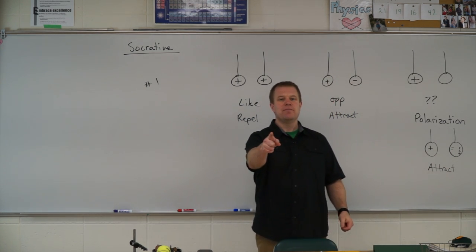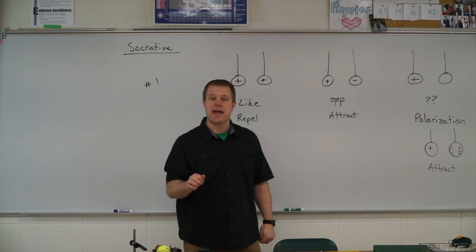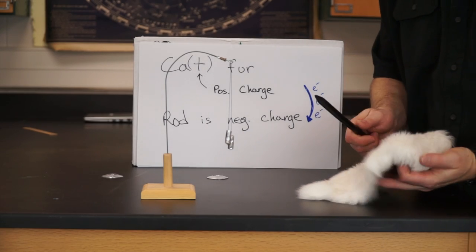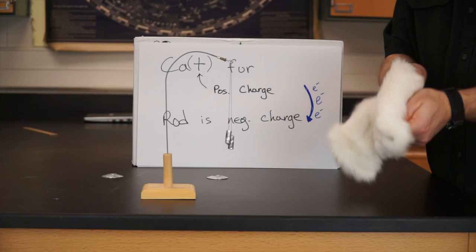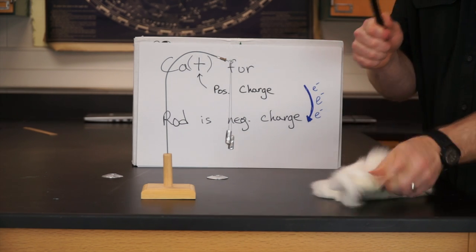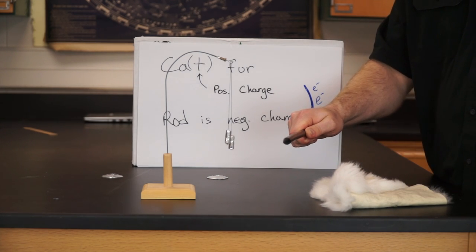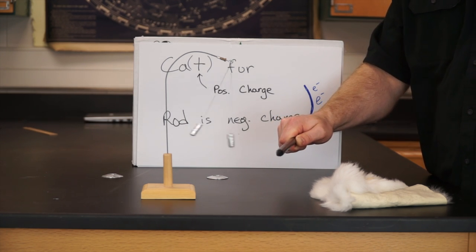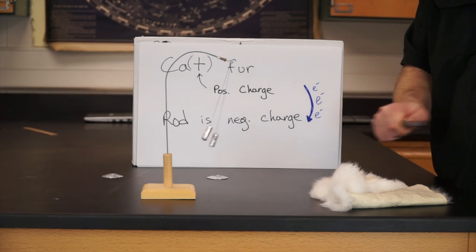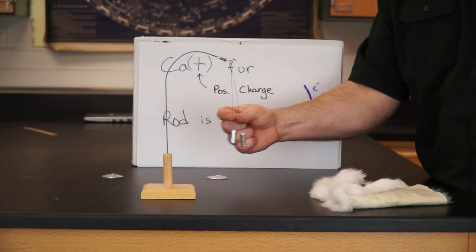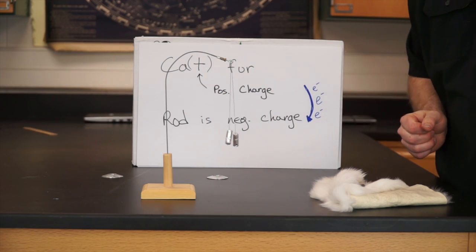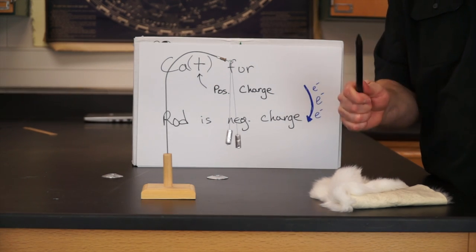Let's go to the back of the room and demonstrate this. I take a charged rod — in this case a cat fur positive rod, so the rod is negative — and as I bring it closer you'll notice it was attracted, showing polarization. Then when it touched the other object, that's conduction, and now they both have the same charge as the rod they touched.